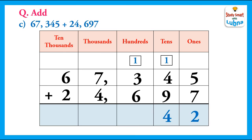After this, we add the hundreds: one plus three plus four plus six equals ten. We regroup the hundreds, write zero in the hundreds column, and put one carry on the thousands column. After this, we add the thousands: one plus seven plus eight plus four equals twelve. We regroup — write two in the thousands column and one carry on the ten-thousands column. We then add the ten-thousands: one plus six plus two equals nine. So after adding sixty-seven thousand three hundred and forty-five and twenty-four thousand six hundred and ninety-seven, we get ninety-two thousand and forty-two.